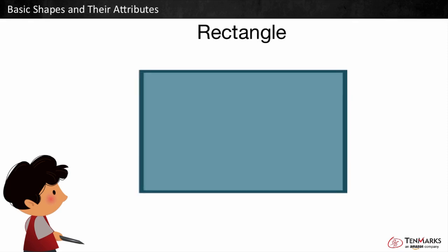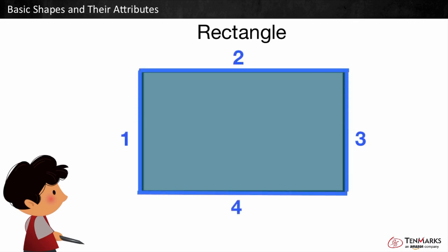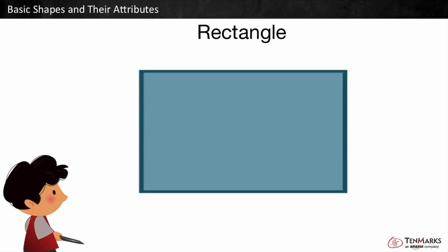This is a rectangle. A rectangle is a closed shape that has four straight sides and one, two, three, four corners. A rectangle has opposite sides that are the same length. A rectangle also has corners that are all the same size.